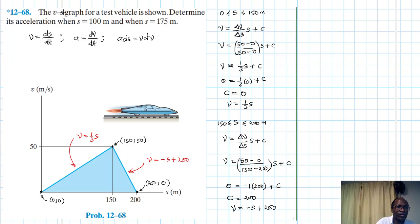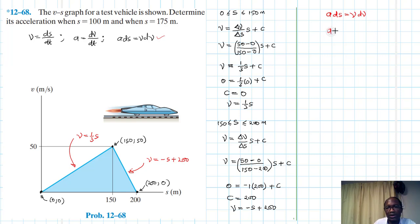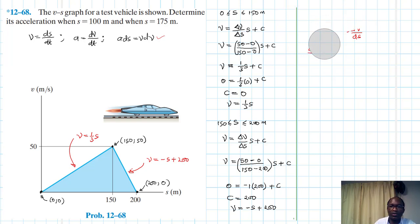We are going to use this particular equation: a·ds = v·dv. We can rewrite this as a = v·(dv/ds).